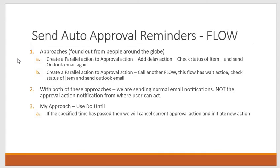Another approach is to create a separate flow: through the parallel action you call that flow, and in that flow you again have a wait or delay action, check the status, and send an Outlook email. What I found is that in both of these approaches you are actually not sending the approval action notification to the user — you are just sending a normal Outlook email from which the user can't take action.